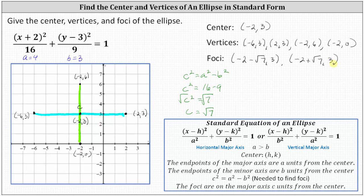To plot these on the coordinate plane, it's best to get a decimal approximation. For the first focus, negative two minus square root of seven is approximately negative 4.65, so negative 4.65 comma three is approximately here. On the right, negative two plus square root of seven is approximately 0.65, so 0.65 comma three is approximately here.